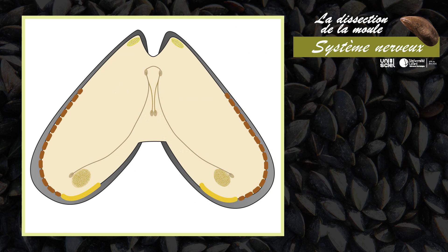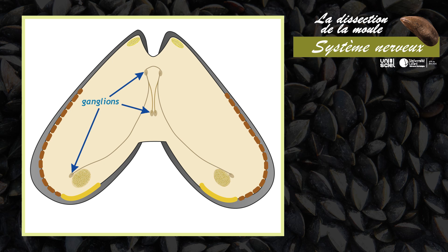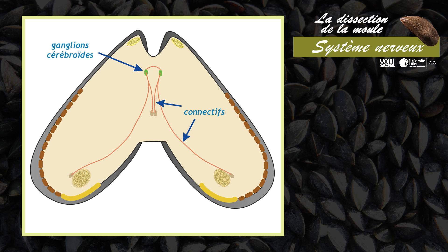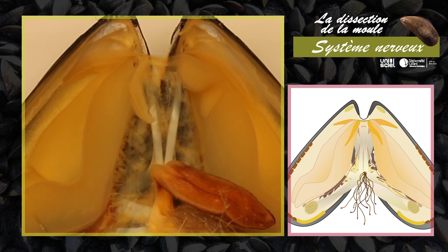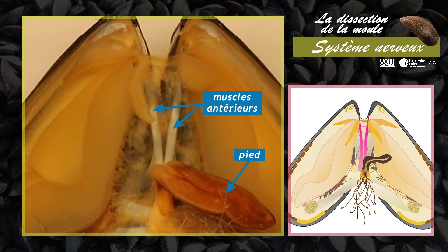Le système nerveux de la moule est à symétrie bilatérale. Il se compose de trois paires de ganglions reliés entre eux par des connectifs : une paire de ganglions cérébroïdes, une paire de ganglions pédieux et une paire de ganglions viscéraux. La partie antérieure du système nerveux est masquée par le pied et ses muscles antérieurs.